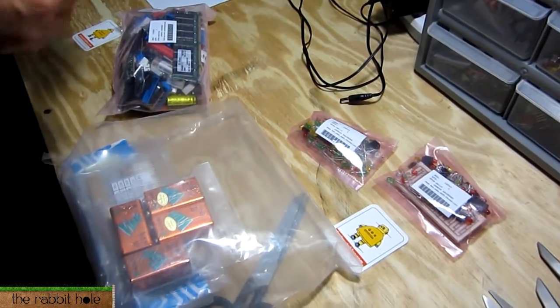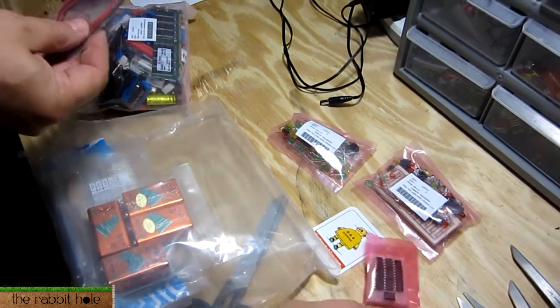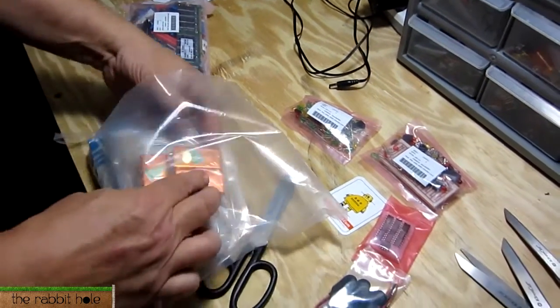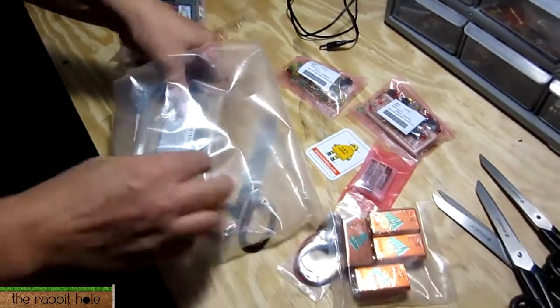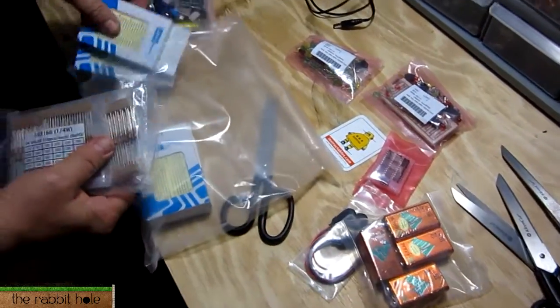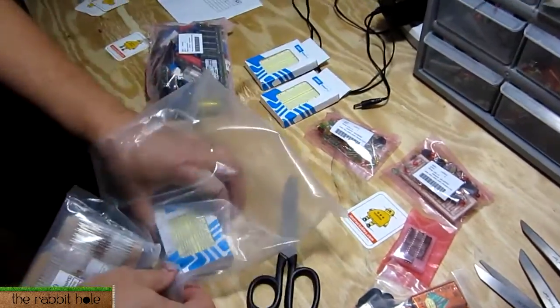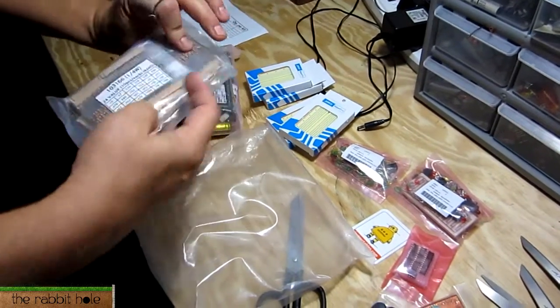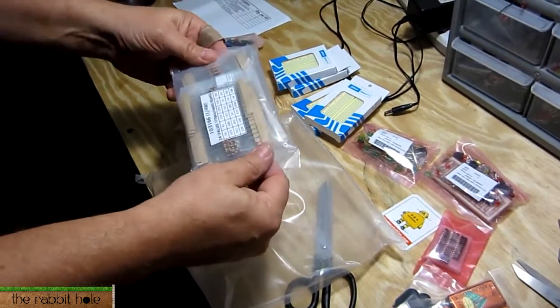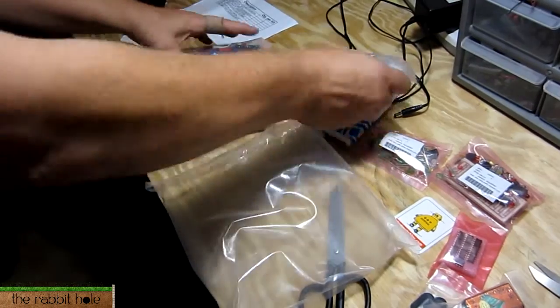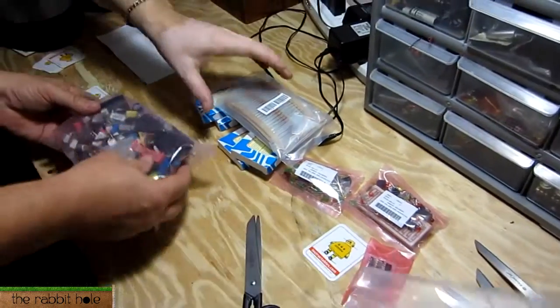which looks like 10 of them. Yep, 555s and some 9 volt adapters and some 9 volts. Whoa, they even give us batteries. Yeah, and some breadboards. Holy moly, we have a lot of resistors and this pack looks kind of cool.